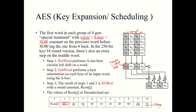You can see from the diagram: word 1 gets special treatment, but word 5 is obtained from word 1 XOR word 4. Word 6 equals word 5 XOR word 2 from the original matrix, and so on. This is how the key expansion algorithm works.